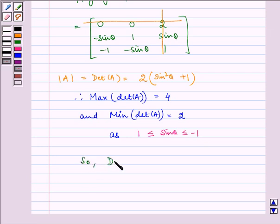So determinant of A belongs to the closed interval [2, 4]. So the correct option is D.